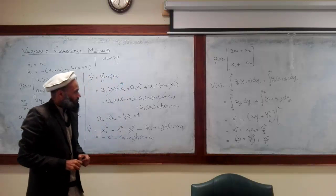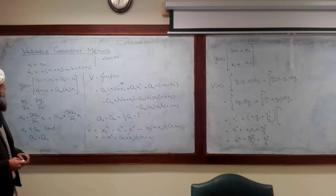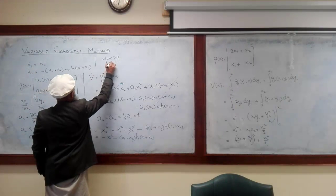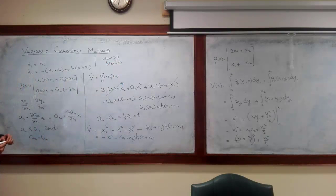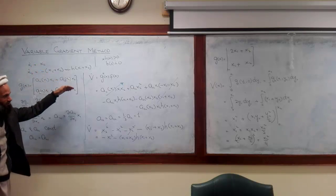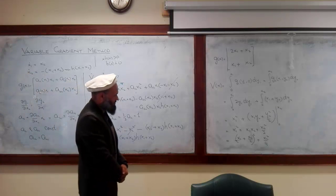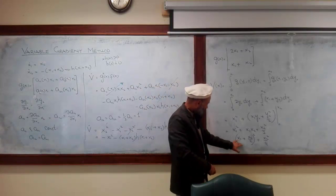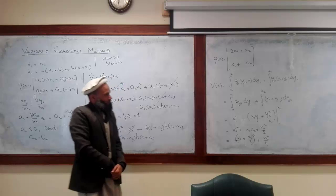What is conclusion? The equilibrium point for this system which is at origin because h of 0 is 0. The equilibrium point for this system which is at origin is asymptotically stable. Rather it is globally asymptotically stable because this function is also radially unbounded.